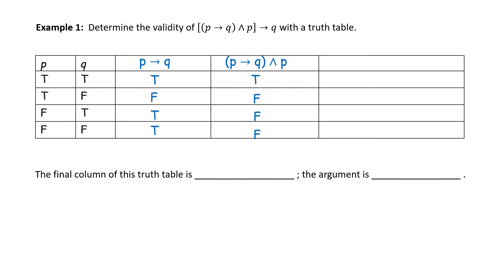Now let's put that together for the entire direct reasoning argument — that is, if (P → Q) ∧ P, then Q. We look at the fourth column truth values as the 'if,' and Q as the 'then.' True implies true is true; false implies false is true; false implies true is true; false implies false is true. The final column of this truth table is all trues, thus the argument is valid.